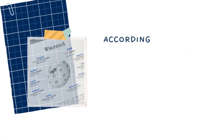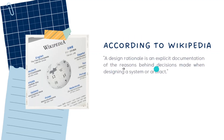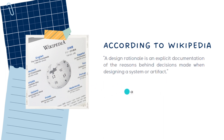According to Wikipedia, a Design Rational is an explicit documentation of the reasons behind decisions made when designing a system or artifact, such as an object. For example, it includes a descriptive form of detail explaining why you made a decision for designing a system or an object.